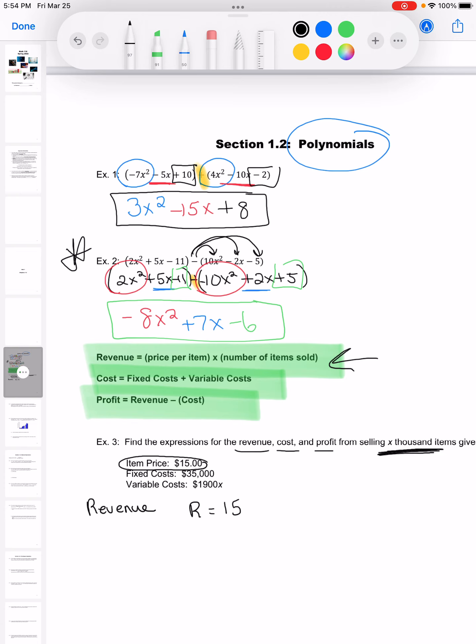So it's going to be 15, and we are selling x thousand. So I'm going to write that as 1,000x. I'm going to multiply times 1,000x, so that is going to give me the revenue is 15,000x.